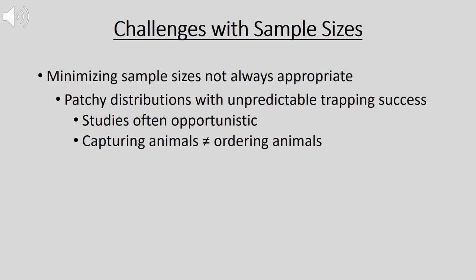One challenge for IACUCs is dealing with sample sizes. One of the three R's charges an IACUC to reduce the number of animals, but minimizing sample sizes is not always appropriate for studies on wild animals. Wild animals are often patchily distributed, leading to unpredictable trapping success. I've been out trapping and been completely unsuccessful for weeks or months, and then suddenly 100 or 200 animals will come into the trap. These studies are very opportunistic — we might complete years' worth of studies in just a few days. Explaining and justifying these sample sizes to IACUCs is often very difficult.